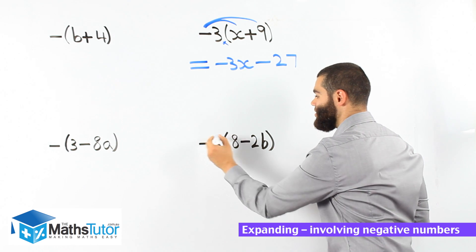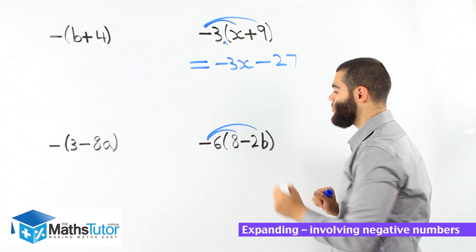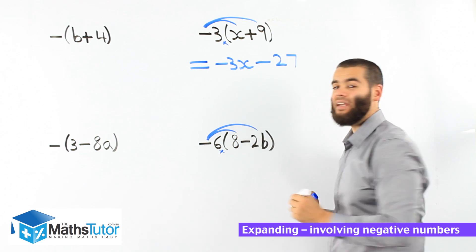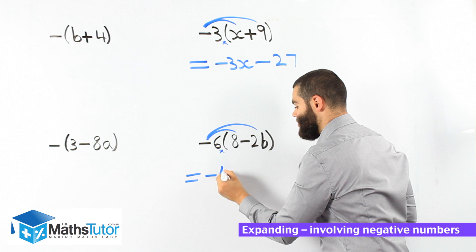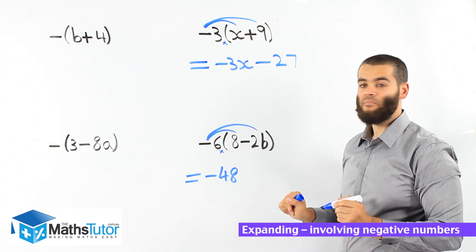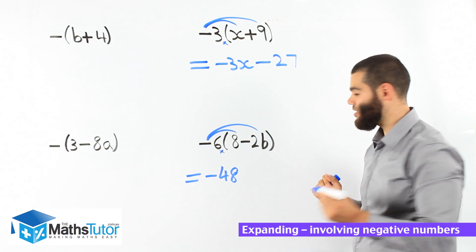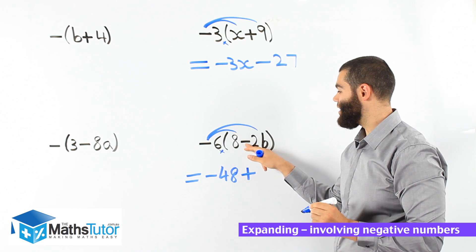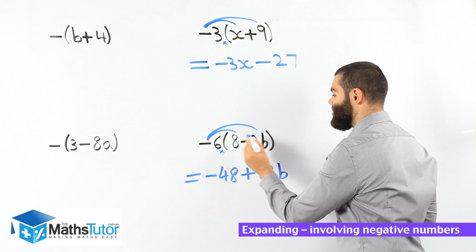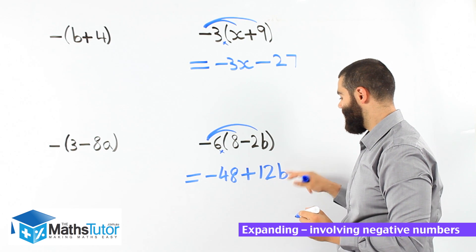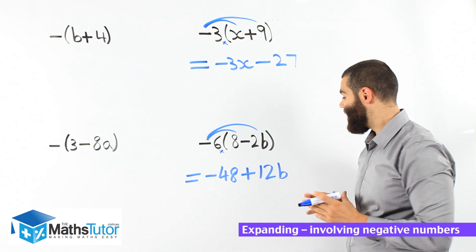Here we have negative 6 times everything inside the bracket. We're asked to expand, so we remove the brackets by multiplying the outside with everything inside. Negative 6 times 8 is negative 48. Then negative 6 times negative 2b — we notice two negatives. A negative times a negative becomes a positive. 6 times 2 is 12, so negative 6 times negative 2b is positive 12b. Final answer: negative 48 plus 12b.